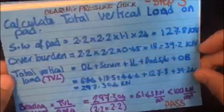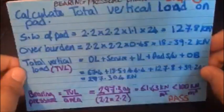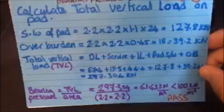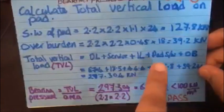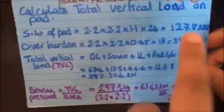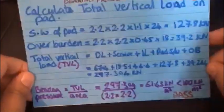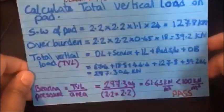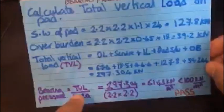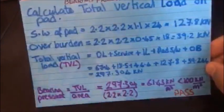And then you can go ahead and calculate the total vertical load, which is the dead load plus the service plus the imposed plus the self weight of the pad, which you just worked out here, and the overburden, which we just worked out here. And then you add them all up, and that gives you a total of 297.304 kilonewtons. Now to work out the total bearing pressure, you need your total vertical load TVL over the area to give you the bearing pressure in kilonewtons per meter squared.